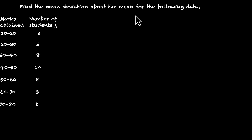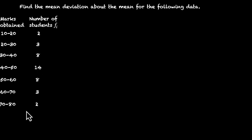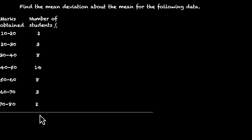Let's do this together. We have to find the mean deviation about the mean, so the first job is to figure out what the mean is. This is not discrete data — it is continuous data. We have 7 classes, each of size 10. Let's first find how many students we have by adding all the frequencies: 2+3+8+14+8+3+2 = 40. So N = 40.